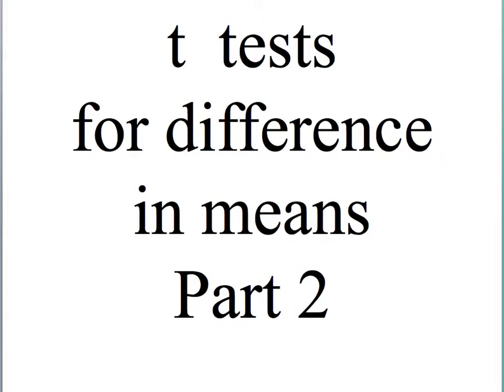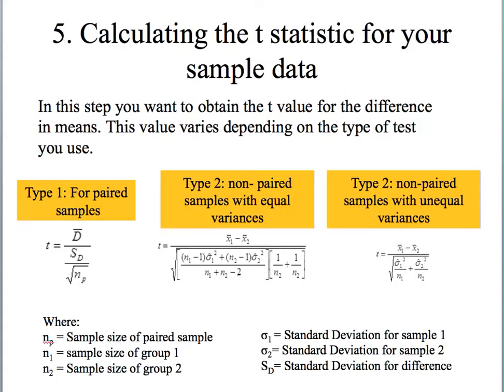In this part, we will talk about step five in a t-test, and that is calculating the t-statistic for your sample data. In this step, you want to obtain the t-value for the difference in means, and the way you obtain this depends on the type of test you're using.